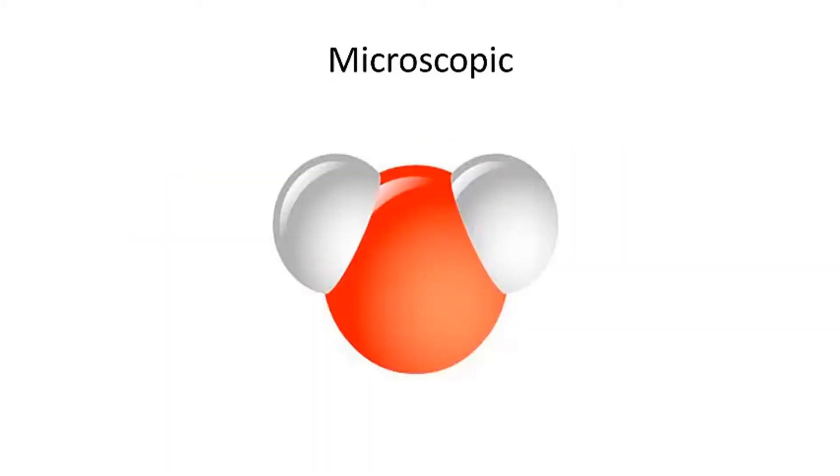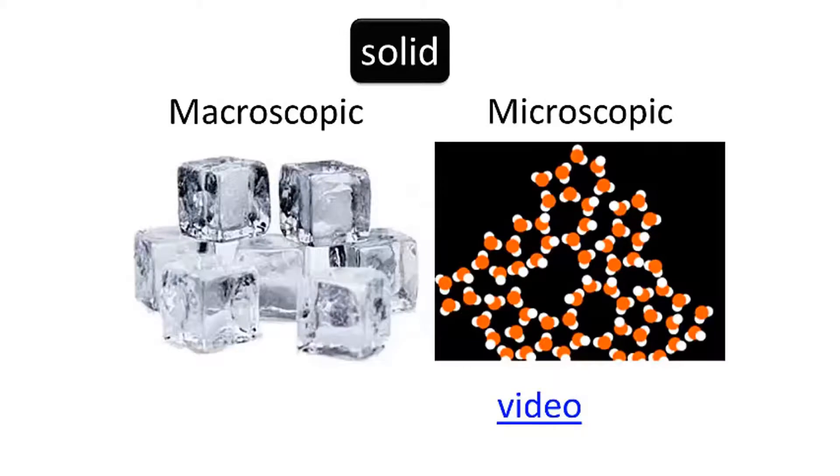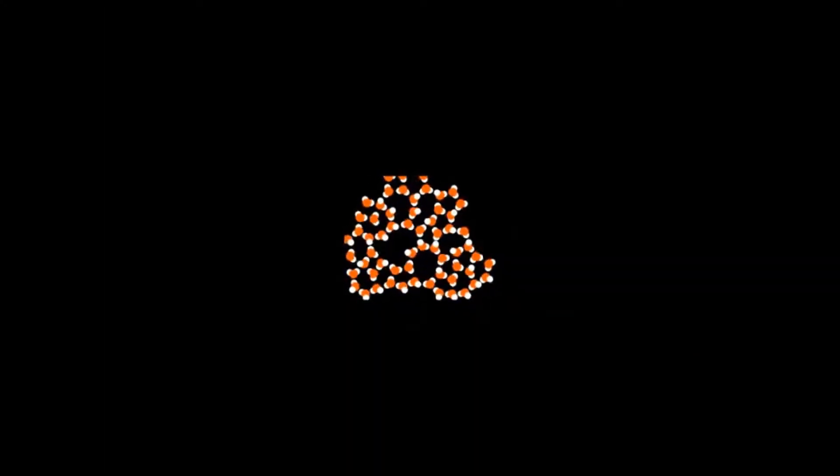But on a microscopic level, this is one way to visualize a water molecule consisting of two hydrogen atoms bonded to an oxygen atom. This is a macroscopic representation of solid water, and here's a microscopic representation according to kinetic theory. Let's look at a simulation of this. We can see how the particles just vibrate in their place.